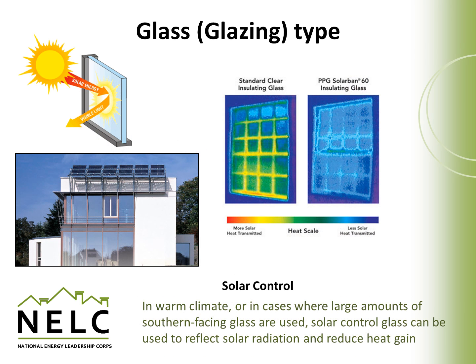Solar controlled glass is specially treated to reduce the penetration of solar energy into a particular space. In this case, we have a relatively large surface area of glass on the south face of a home — you can see the solar modules are facing south, which is why we can tell this glass is also facing south — and that glass would allow for a significant amount of heat gain. This might be a climate where that would be unwarranted and the use of solar controlled glass would be appropriate. This is a thermal image indicating the difference between clear insulating glass versus a specialty glass made by PPG called Solar Bond, which is an insulating glass that reflects solar heat.